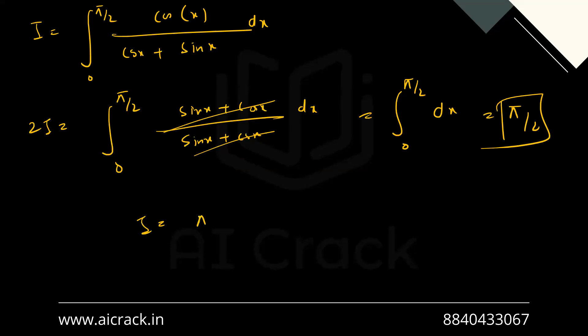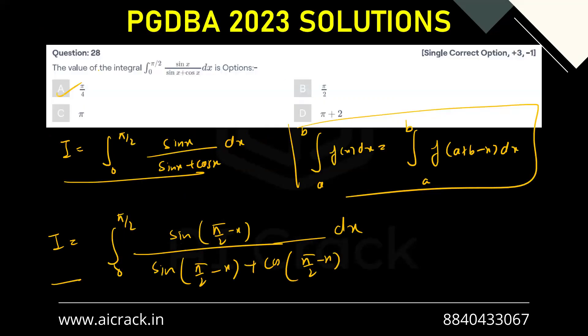So I becomes pi by 4. So we have got A as the correct answer.